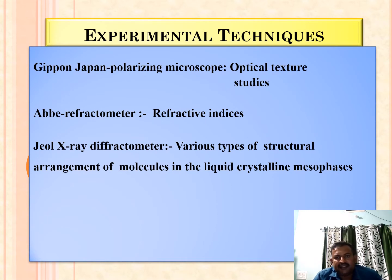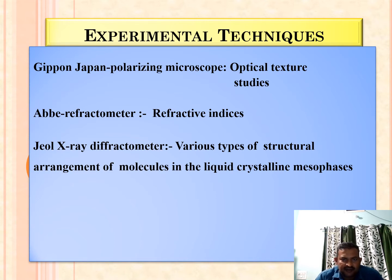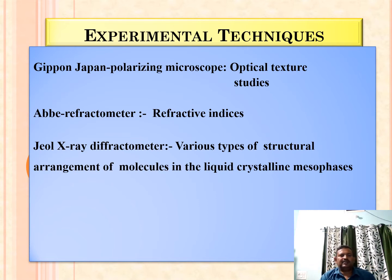The experimental techniques used in this research are: a Jipan polarizing microscope for optical texture studies; refractive indices are studied by a refractometer; and a Geol X-ray diffractometer is used to study the various types of structural arrangements of molecules in the liquid crystalline mesophases. These three instruments are used in this experimental technique.